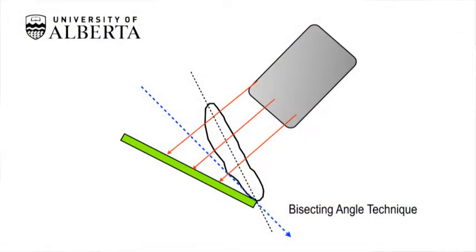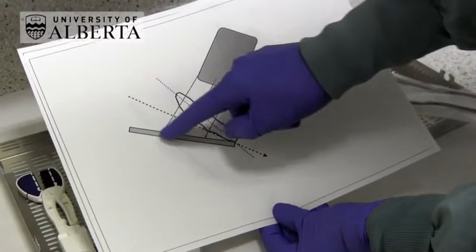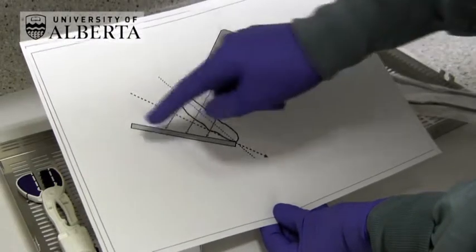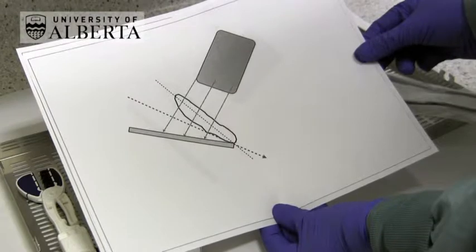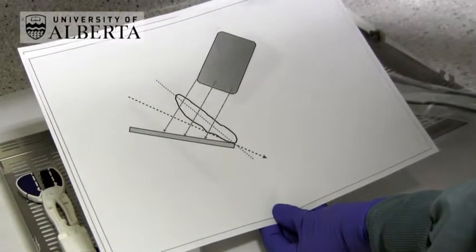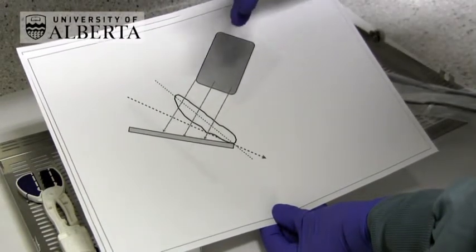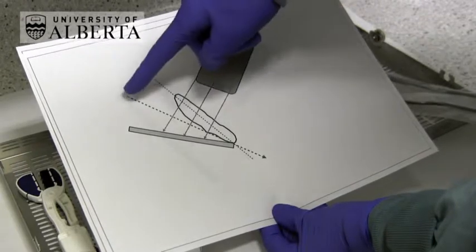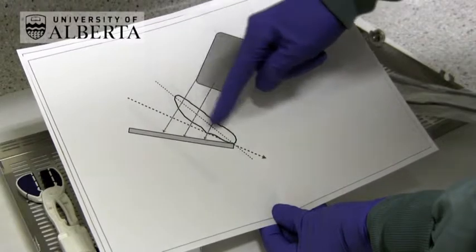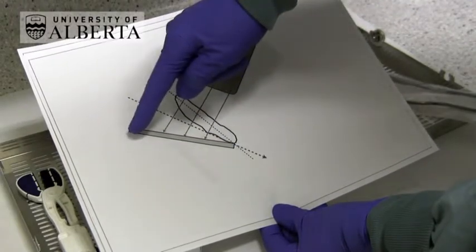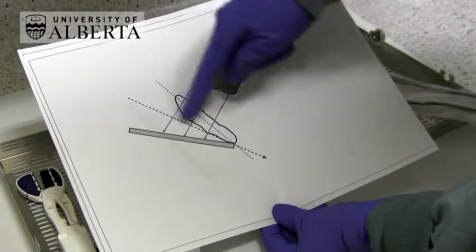In the bisecting angle technique, the image receptor is held right close up to either the lingual or the palatal surface of the tooth of interest. The beam indicating device is then directed at an angle to an imaginary bisector, which divides the angle between the long axis of the tooth and the receptor into two equal portions.